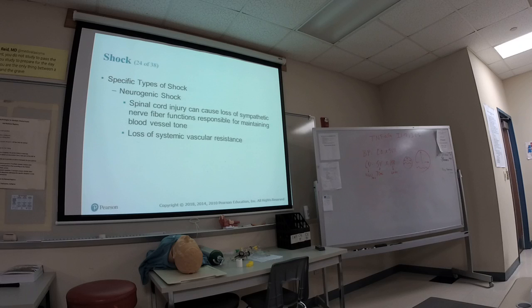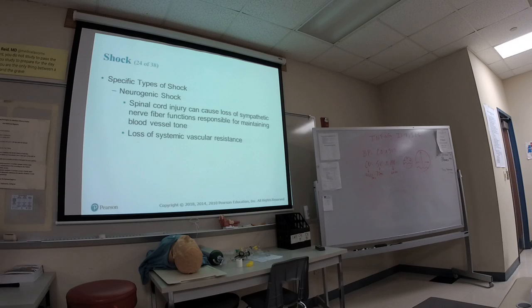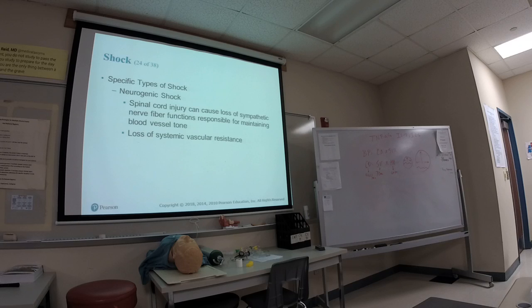With no sympathetic tone, vessels dilate. In neurogenic shock, there's damage to the sympathetic nerve fibers that exit below the injury site. With a high spinal cord injury, you lose sympathetic tone below the injury. The vessels can no longer constrict because the sympathetic response is gone.